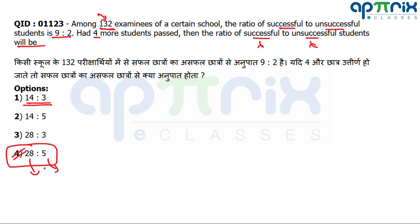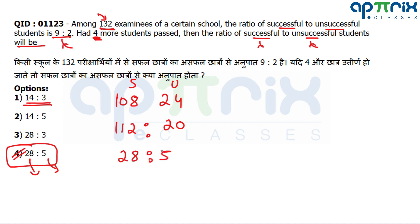Only 28:5, which gives 33 parts, divides 132 completely, giving multiplier 4. To verify: 9:2 with 11 parts and multiplier 12 gives 108 successful and 24 unsuccessful. If 4 more pass, successful becomes 112 and unsuccessful becomes 20 — divide by 4 to get 28:5. Students must be integers, so you can directly mark option four as the answer.